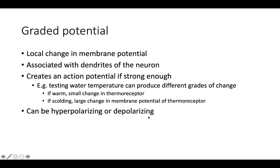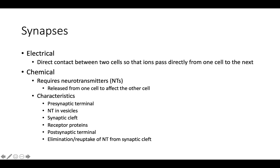Graded potentials can be hyperpolarizing or depolarizing, meaning they can make neurons more or less likely to fire action potentials. These are based on neurotransmitters. When we talk about synapses, we have electrical or chemical synapses. The chemical ones use neurotransmitters, whereas electrical ones use direct contact between cells so that ions pass directly from one cell to the next.